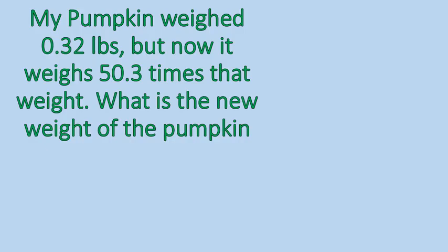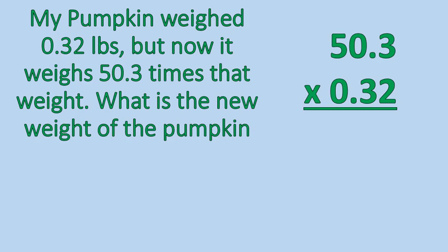The third operation is multiplication. With this type of question, you'll usually be told 'times something,' or words in the question will indicate multiplying. 'Product' is one word that also means multiply. So let's look: My pumpkin weighed 0.32 pounds, but now it weighs 50.3 times that amount. What is the new weight of the pumpkin? We are multiplying because they use the word 'times.' You can set this up as 0.32 times 50.3, or 50.3 times 0.32 — either way you'll get the same answer.